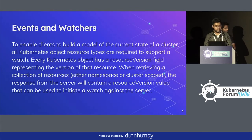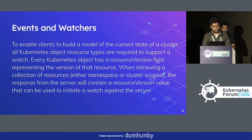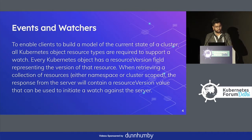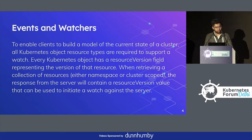There is a concept in Kubernetes of events and watches. To enable clients to build a model of the current state of the cluster, all Kubernetes object resource types are required to support a watch. Every Kubernetes object has a resource version field representing the version of that resource. When retrieving a collection of resources — namespace bound or cluster bound — the response from the server will contain a resource version, and we can use that to initiate a watch.